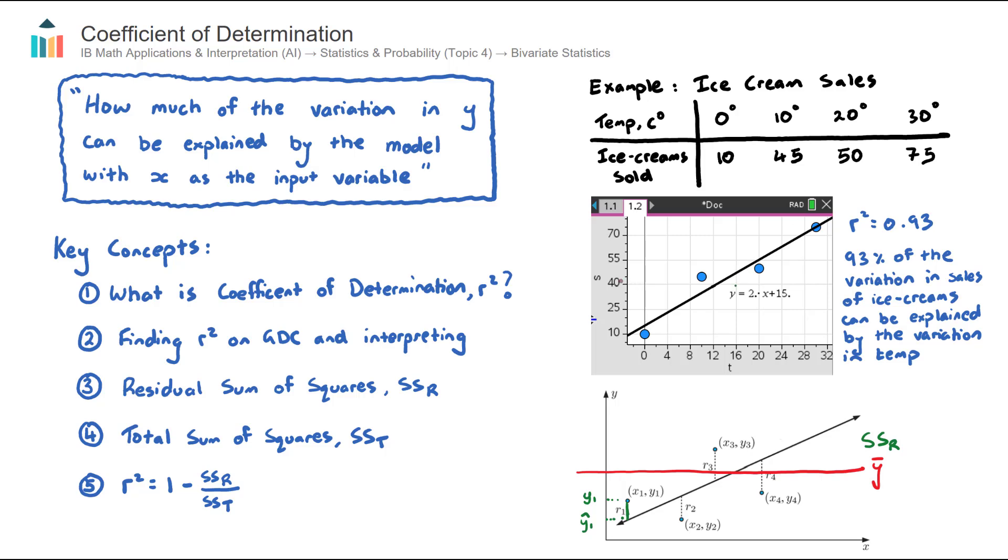And the total sum of squares is actually the same concept, it's squaring the length, but now from the average line to the data points. So it's all of these lengths here, and likewise we square them so that we are adding positive numbers together. And we call that the SST.